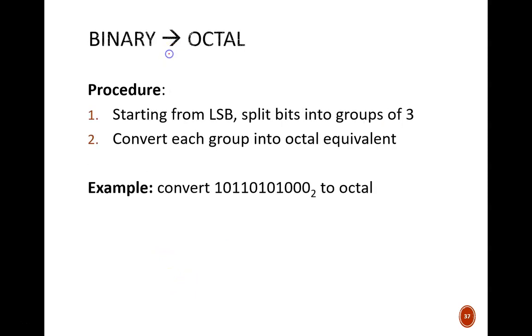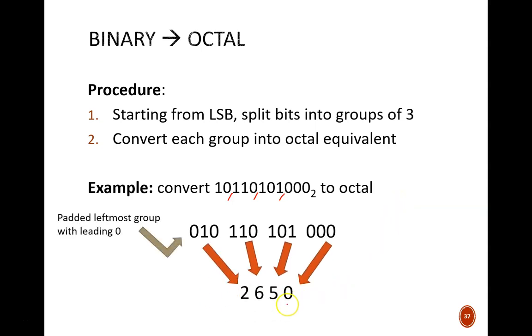Finally, here's an example of converting a binary number into octal. Working from right to left, split the binary sequence into 3-bit chunks. Then replace each 3-bit code with its octal equivalent. So 000 becomes 0, 101 becomes 5, and so on to the end.